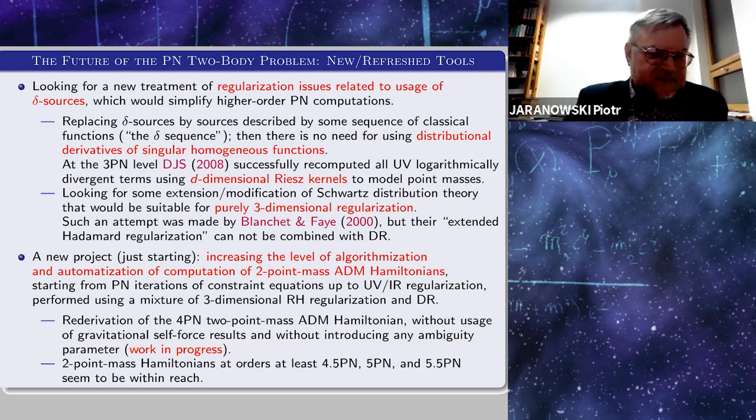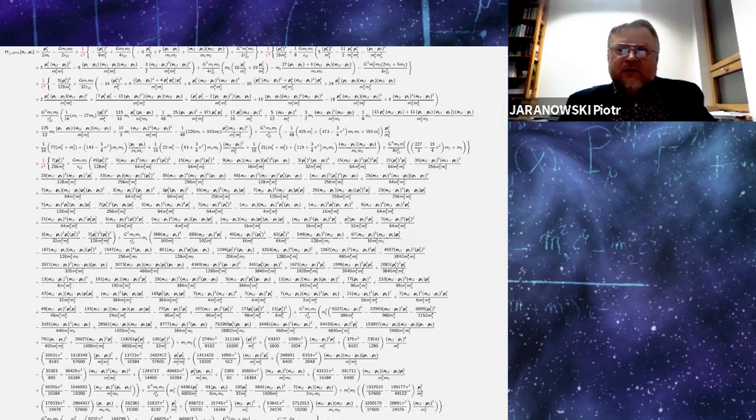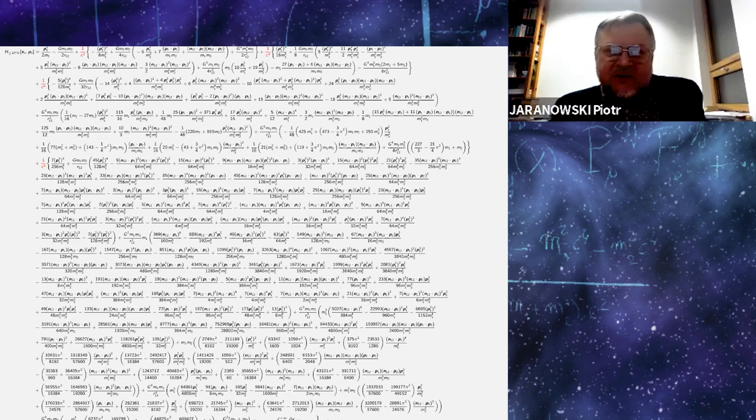And the very last slide shows you fully explicitly the hero of my talk—that is, the conservative 4PN accurate two-point mass ADM Hamiltonian computed in general, non-center of mass reference frame. Thank you for your attention.